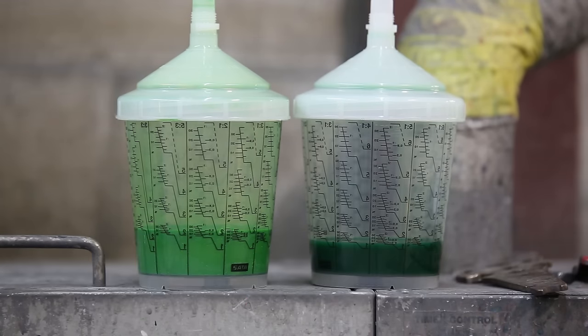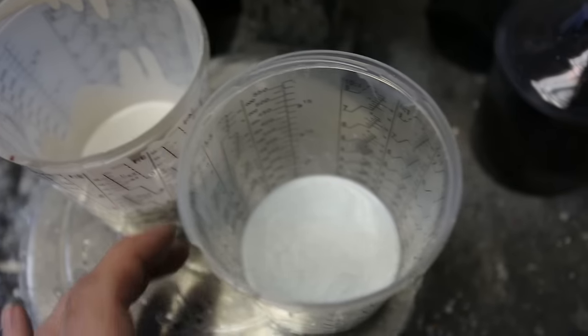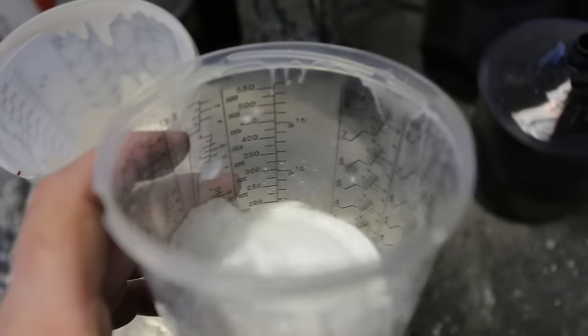For instance, a three-stage white would require the application of a solid white first. Once dry, a transparent pearl coat is applied over top to give the color a sparkling effect.